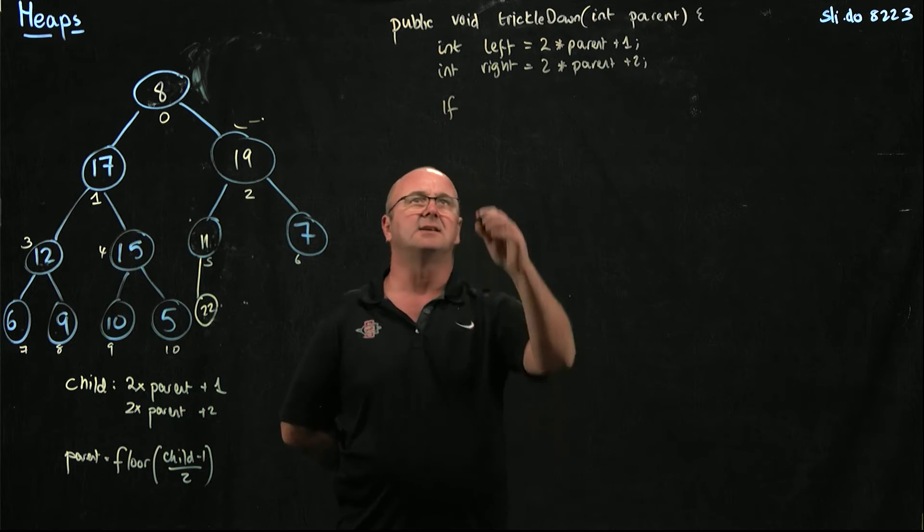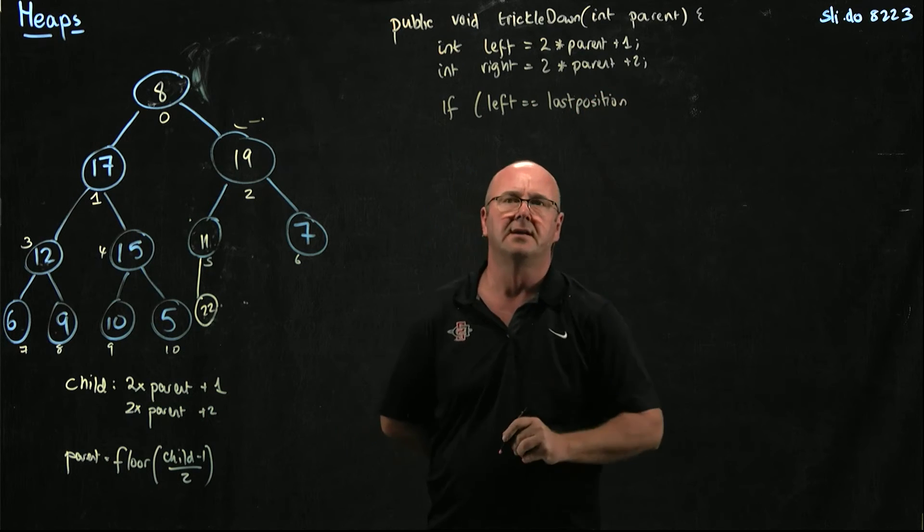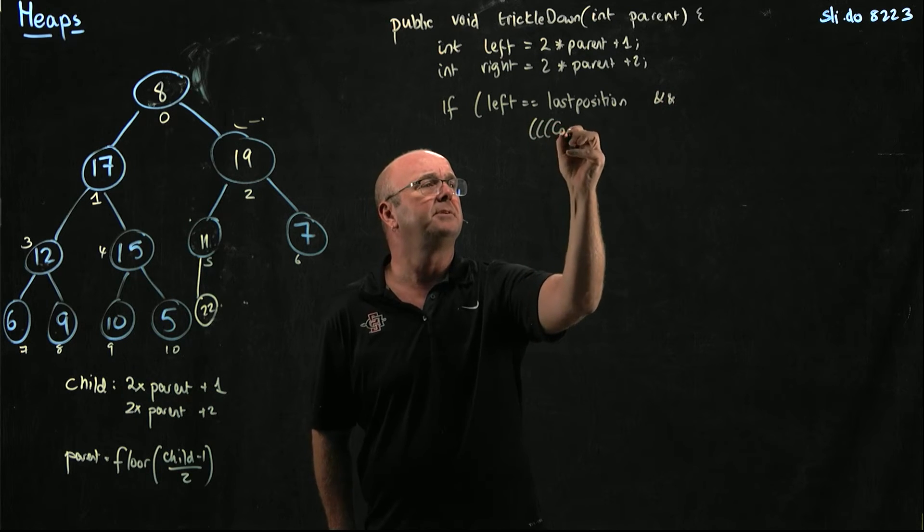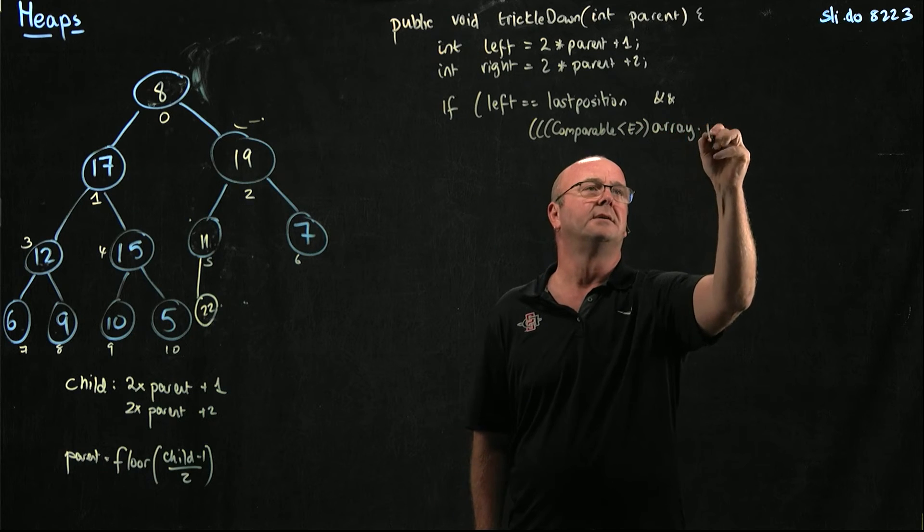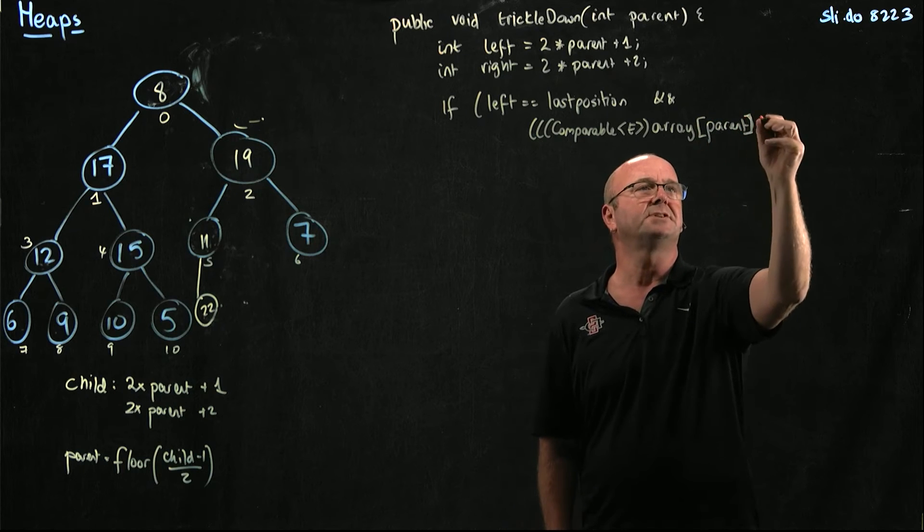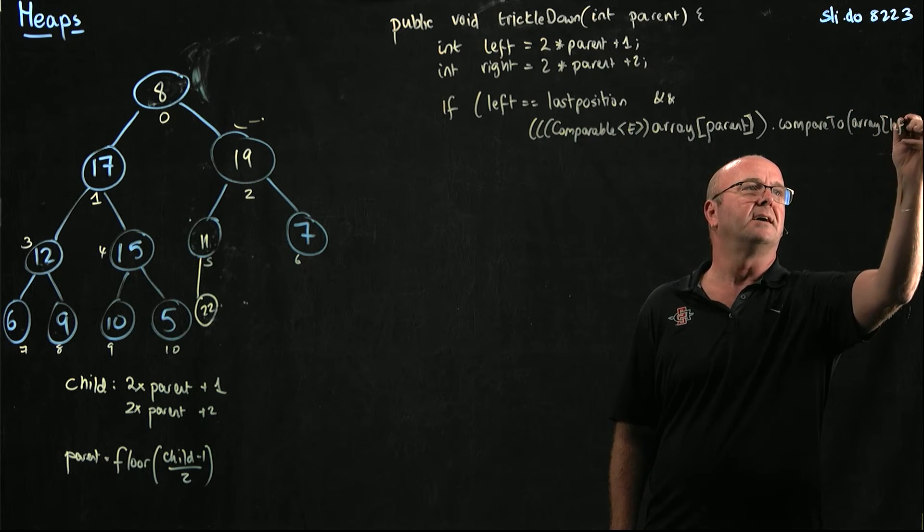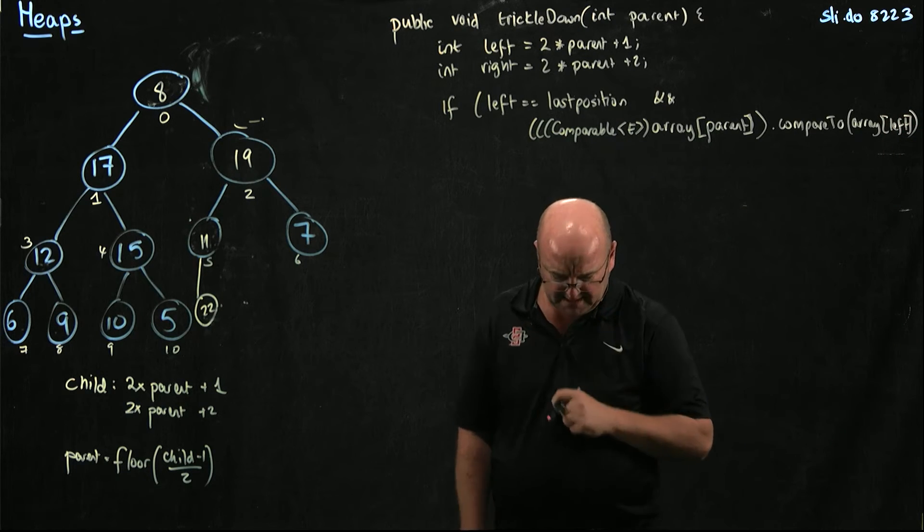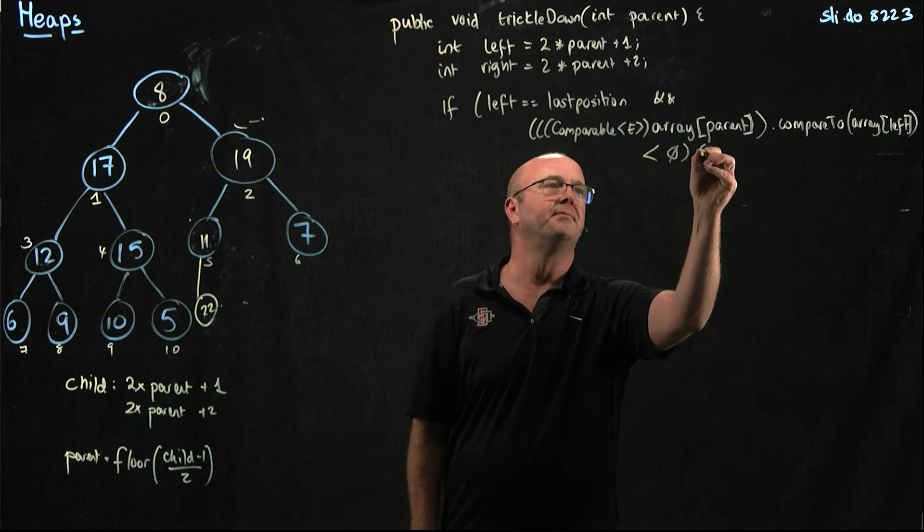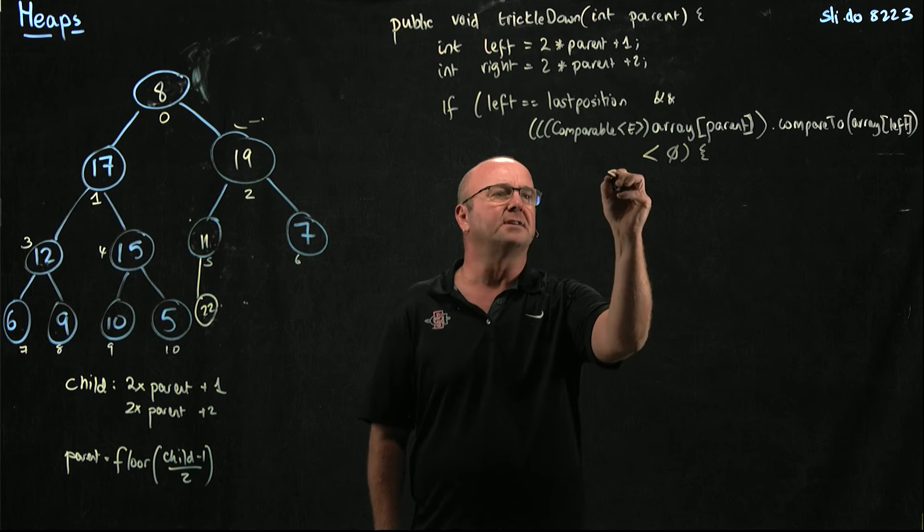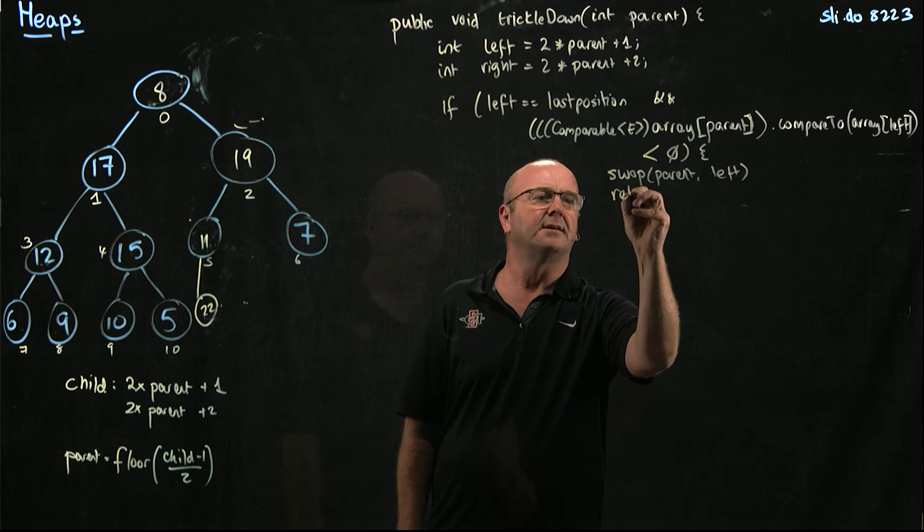So let's take care of those edge cases. So the first edge case is if left is last position. If left is the same as the last position, and we'll do comparable e array dot parent, sorry, not dot parent, a position parent compared to array left. So if our parent is less than our child, so this will be less than 0, then we're going to swap parent and left, and we're going to get out of there.